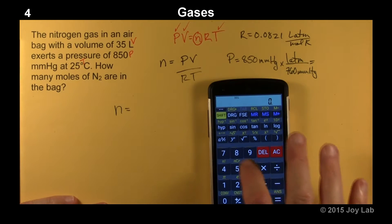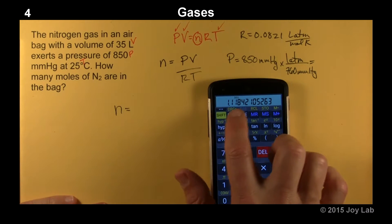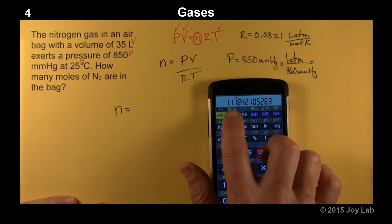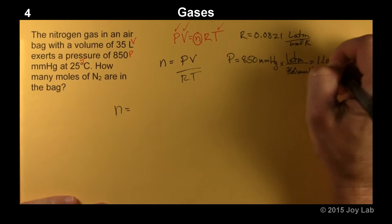So we have 850 divided by 760. Looks like we get to 1.1, let's call it, 1 atmospheres.